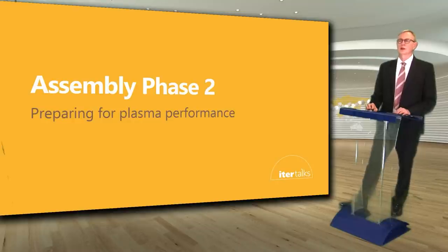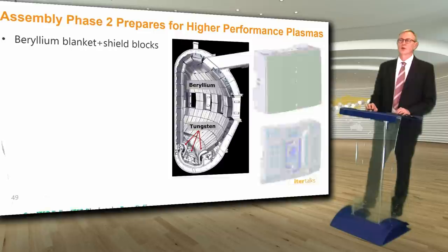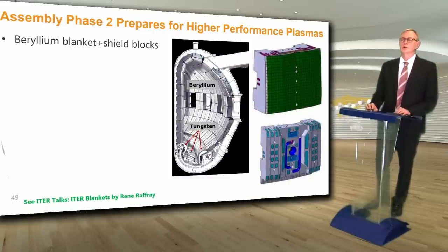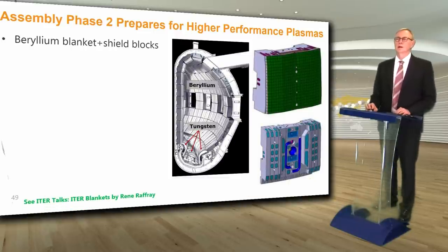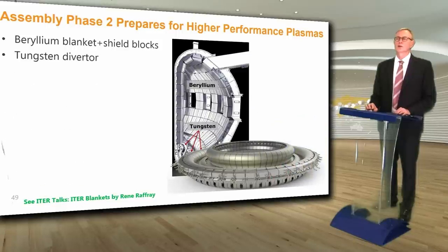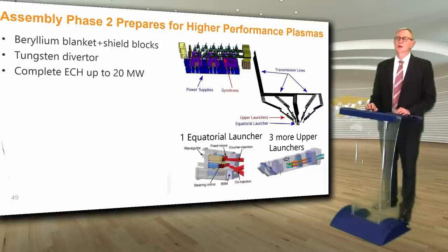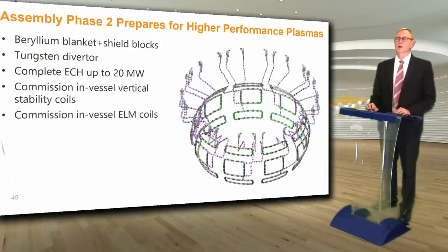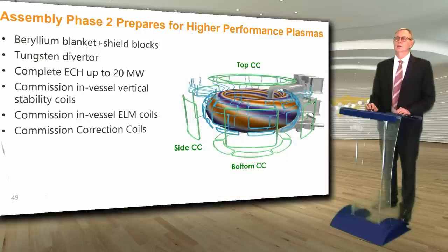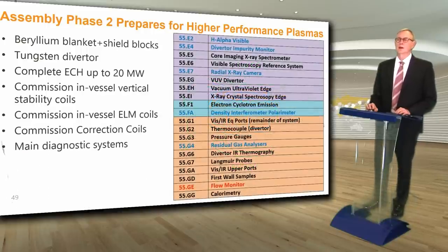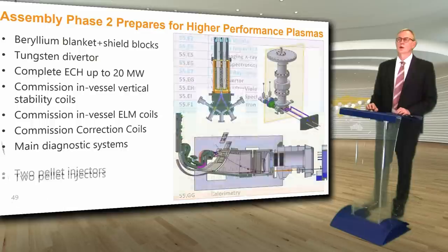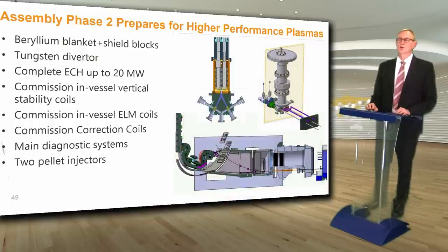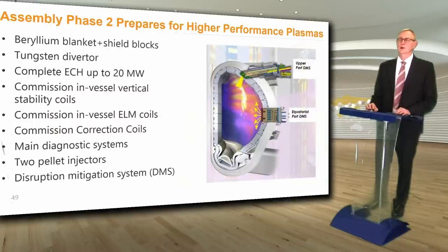Next will be assembly phase two to prepare for plasma performance. The main additional components include the beryllium blanket and shield blocks, the tungsten diverter cassettes, the complete ECH system up to 20 megawatts, commissioning of the in-vessel vertical stability coils, the edge localized mode (ELM) control coils, and the external correction coils. The main diagnostic systems will also be installed, as well as two pellet injectors for fueling and for controlling edge localized modes with frozen hydrogen pellets, and the disruption mitigation system.